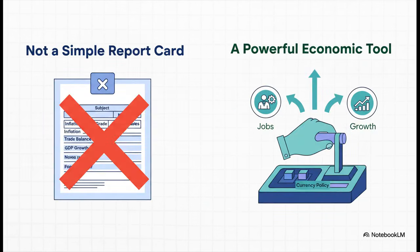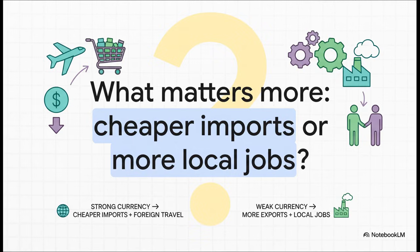The main takeaway: thinking about a currency's strength as simply good or bad is missing the point. It isn't a report card on how well an economy is doing — it's a powerful lever, a tool that policymakers can pull to achieve very specific goals, like creating jobs. A strong currency gets you cheaper imports and more affordable vacations, but a weak currency might create more jobs in your community, even if it makes imported goods a little pricier. So what really matters more — cheaper stuff for you, or more jobs for everyone? That's the fundamental trade-off at the heart of all of this.